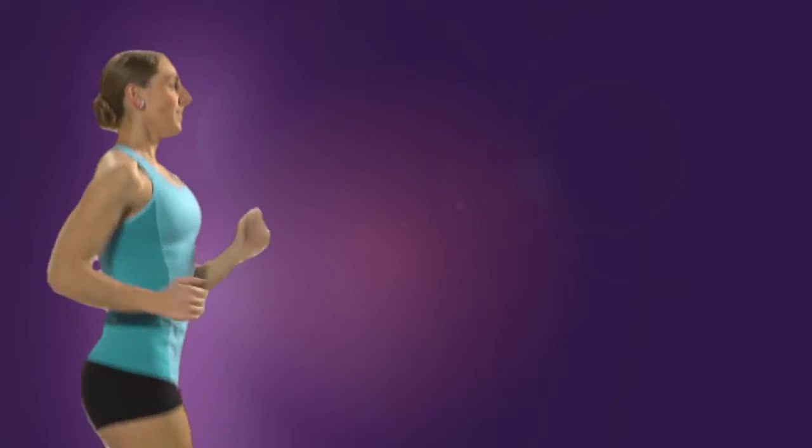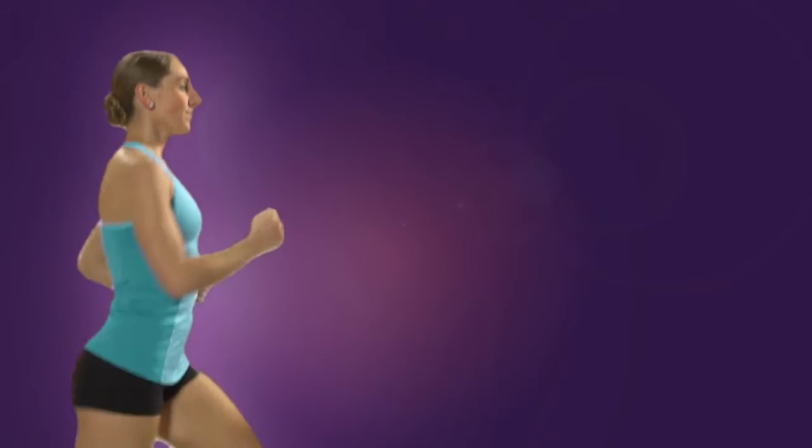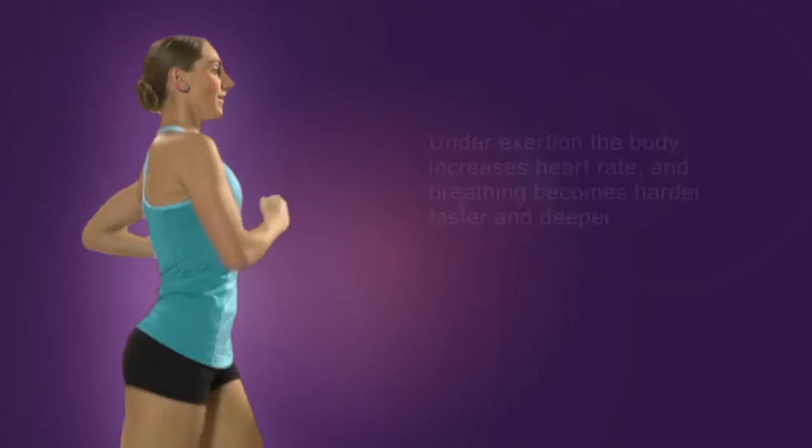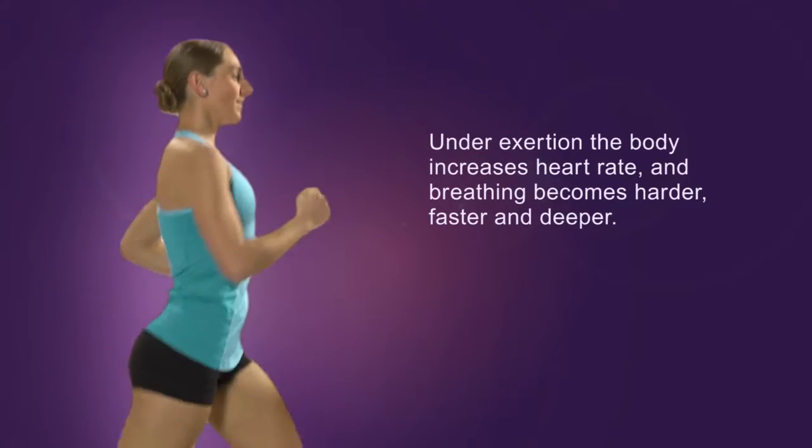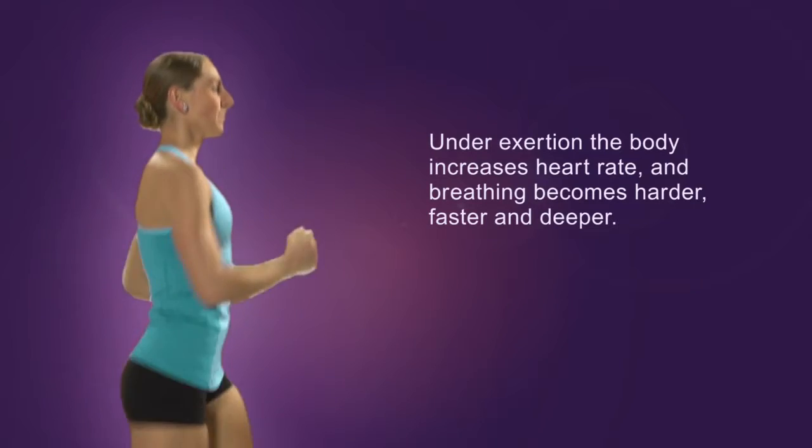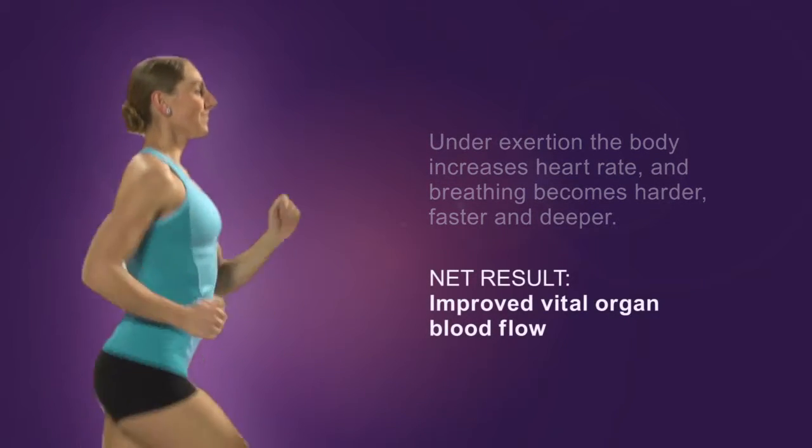When we exert ourselves, metabolic needs change, and the body regulates intrathoracic pressure to meet these increased demands. We breathe harder, faster, and deeper, enhancing the vacuum in the chest that pulls more air into the lungs, more blood back to the heart, and lowers ICP. The net result is improved vital organ blood flow.